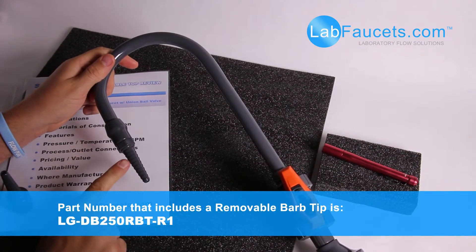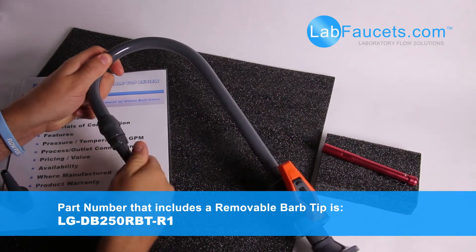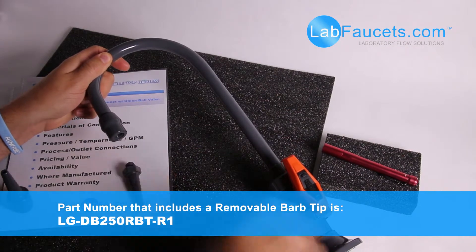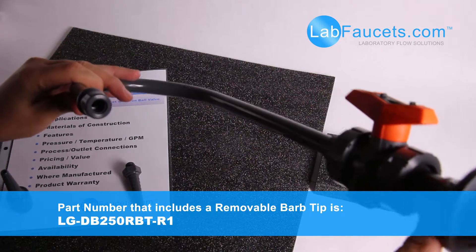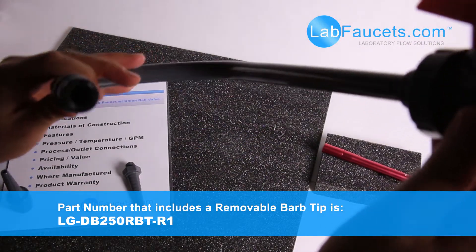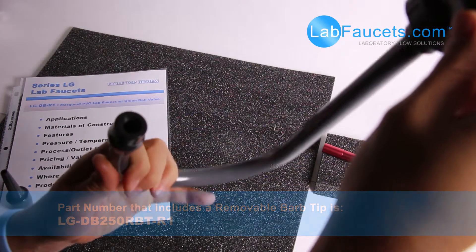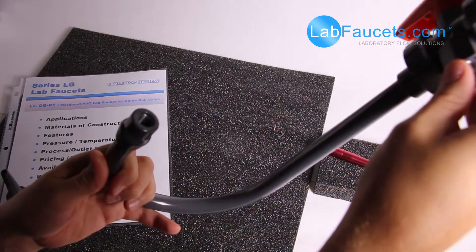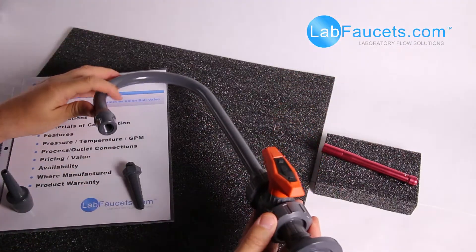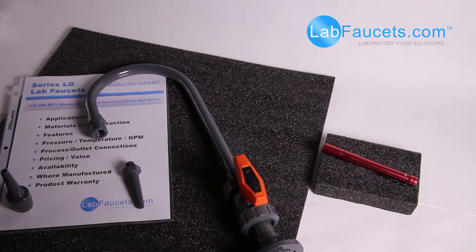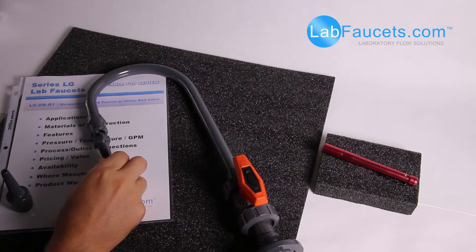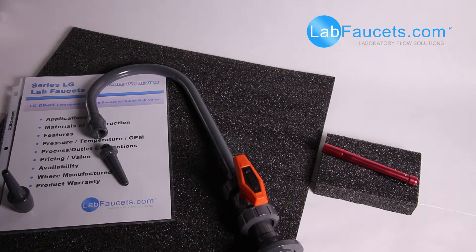When this serrated barb tip is removed, it leaves a quarter-inch female NPT thread. So if you want the option of adding a 0.2 micron capsule filter or an aspirator, other accessories, having this removable barb tip is a big bonus.